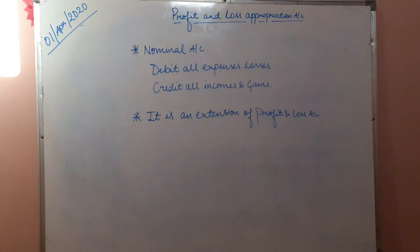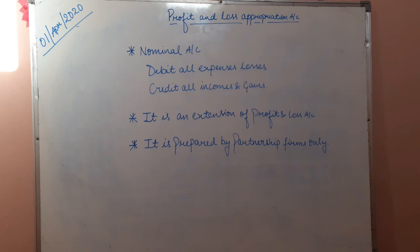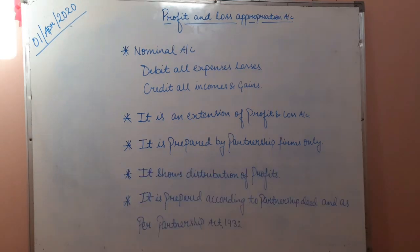Another feature is that P&L Appropriation Account is an extension of the Profit and Loss Account. It is prepared by partnership firms only, and it is prepared for the purpose of distribution of profit among the partners. It shows the distribution of profits. It is prepared according to the partnership deed and as per the Indian Partnership Act 1932.